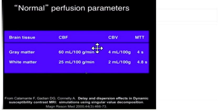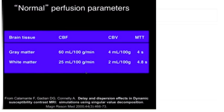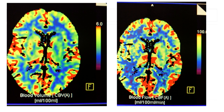What are you going to call infarcted? Usually a CBF of less than 30 — maybe 40, but less than 30 — would indicate infarct. A CBV of less than 2 would also indicate infarct. Here's what the CBV map looks like: these are 22 slices at 5-millimeter intervals, but this is just one slice showing cerebral blood volume expressed in mLs of blood per 100 mLs of tissue.